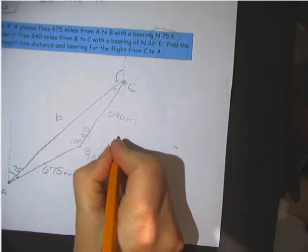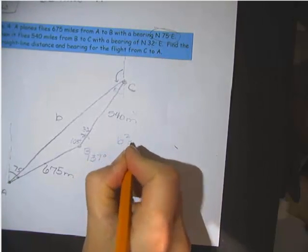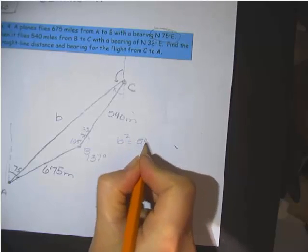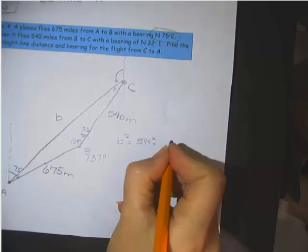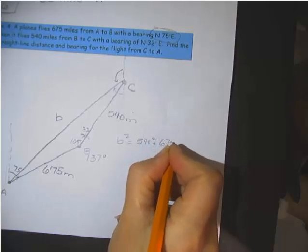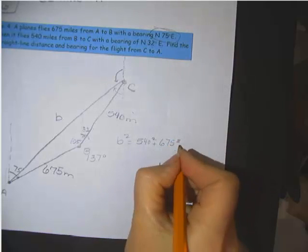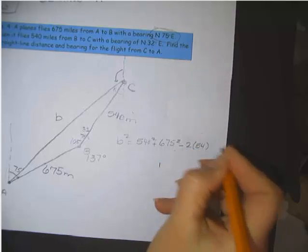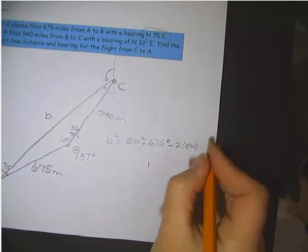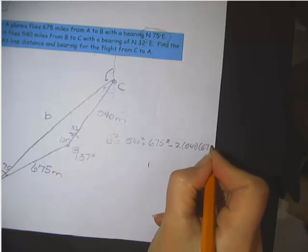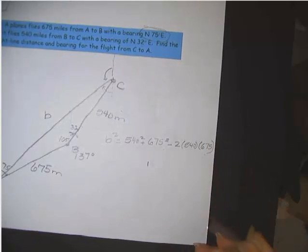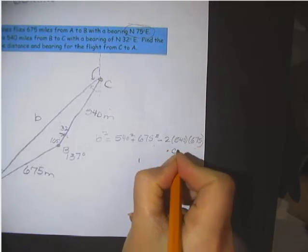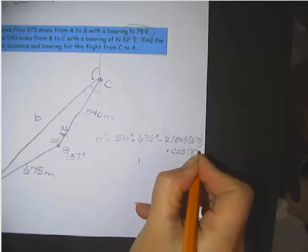So little b, if we put it in the law of cosines, we're looking for little b. So it's b squared equals the two sides, a squared, 540 squared, plus c squared, 675 squared, minus 2 times a, 540, times c, 675, times the cosine of the angle B. We'll write it down here times the cosine of 137 degrees.